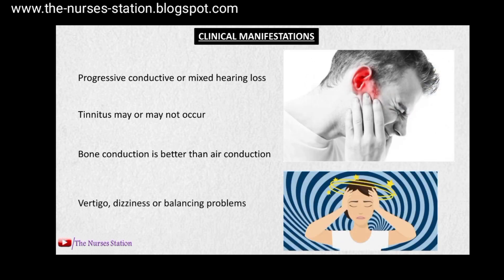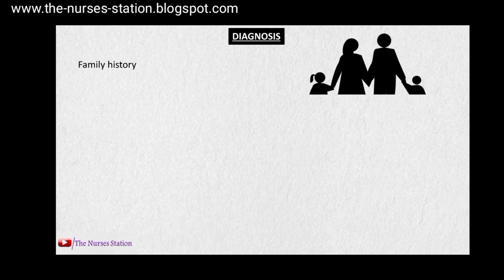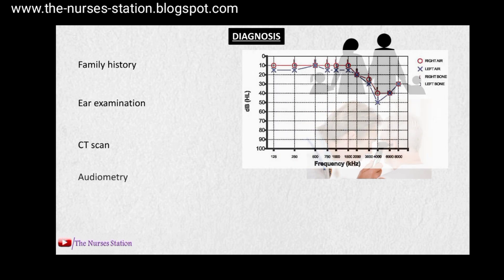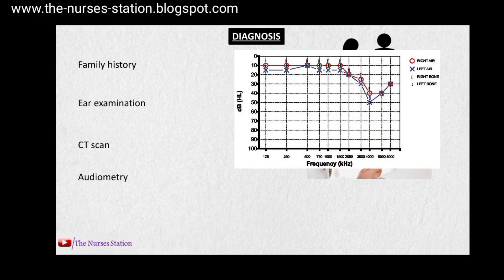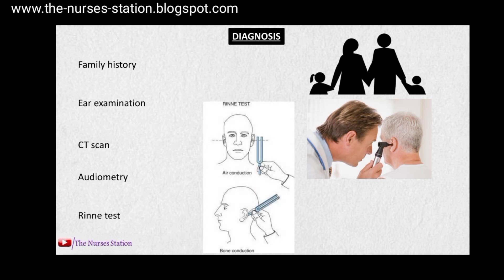The patient may also feel vertigo, dizziness, or balancing problems. To diagnose otosclerosis, we can investigate the family history of the patient, use ear examination with an otoscope to look into the ear, use CT scan, audiometry to assess how well the patient hears sounds, and the Rinne test as already described.